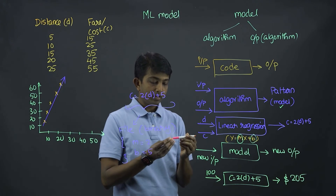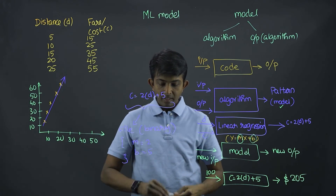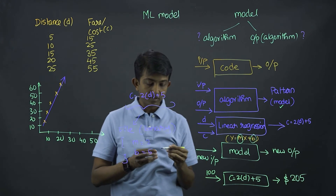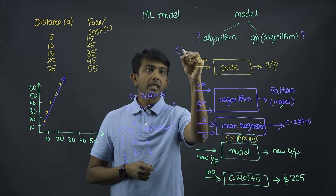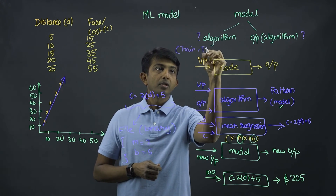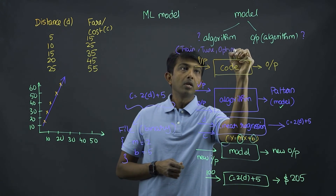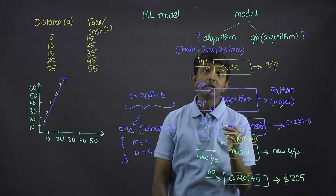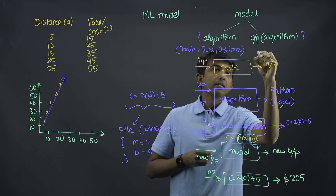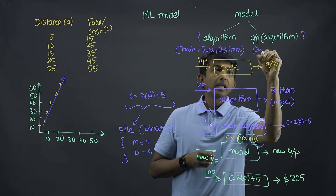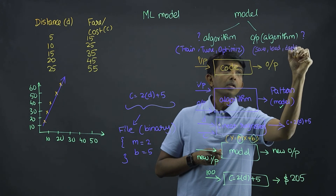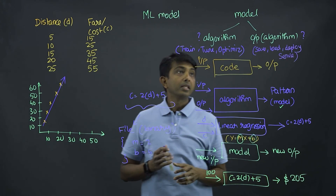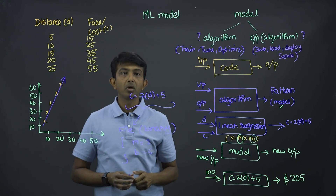Coming back to our original question: how do we identify when someone is talking about the algorithm versus the output of the algorithm? If you hear somebody talk about train, tune, or optimize a model, they're really talking about the algorithm or the statistical algorithm underneath the model. Or when you start hearing about save the model, load the model, deploy or serve the model — they're basically talking about the output of the algorithm, which is nothing but the model in a file format.